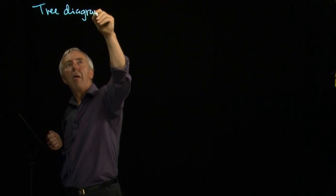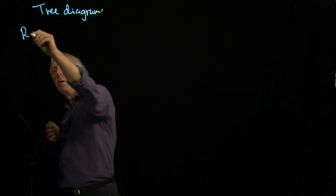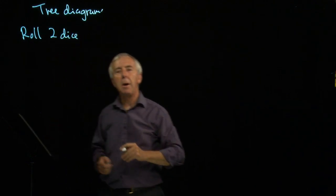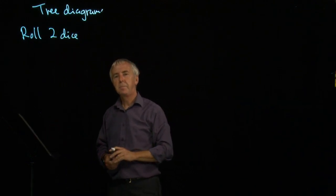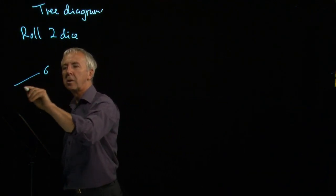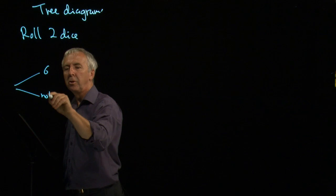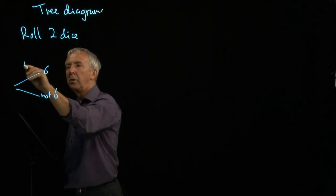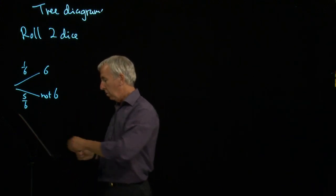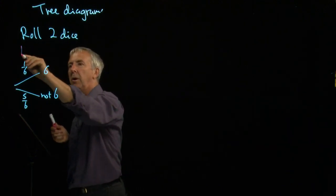First one, let's roll two dice and think about how many sixes might come up. On the first roll, we might get a six or not a six, and the chances are one-sixth and five-sixths. That's the first roll, the first throw of the dice.